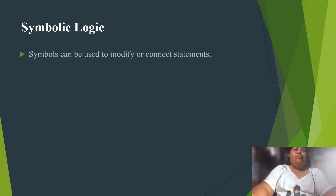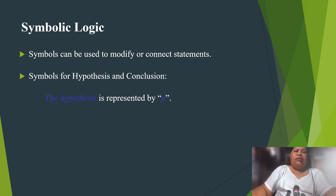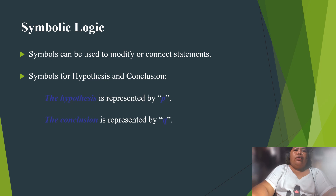We have symbolic logic. Symbols can be used to modify or connect statements. The hypothesis is represented by P, and the conclusion is represented by Q. So we write: if P, then Q.